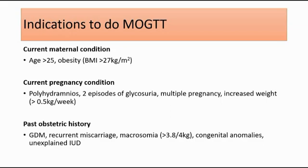For current pregnancy conditions: polyhydramnios, which means excessive liquid amount; two episodes of glycosuria, when there is glucose in the urine; multiple pregnancy like twins or triplets; and increased weight gain of the mother, which is more than 0.5 kg per week.